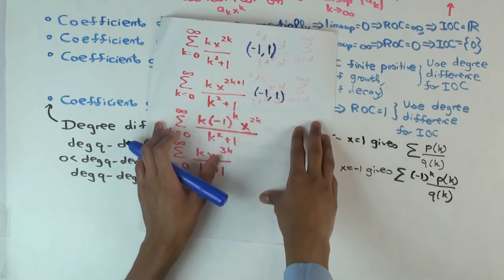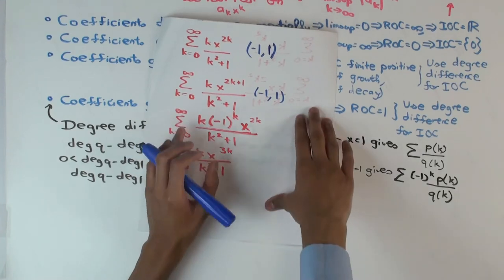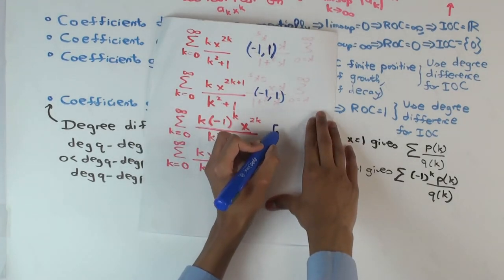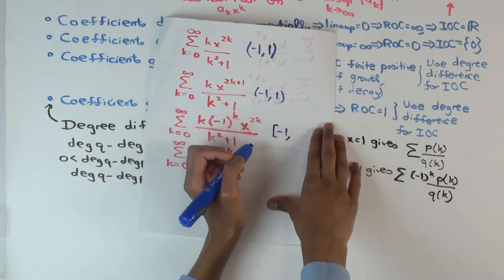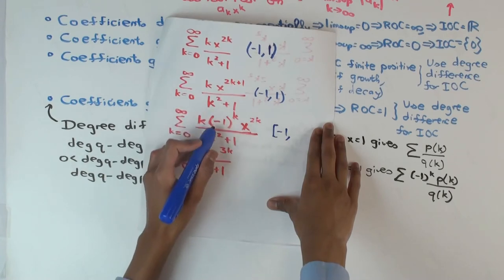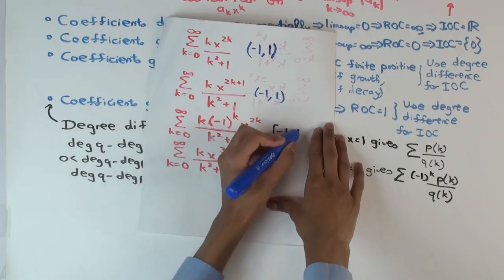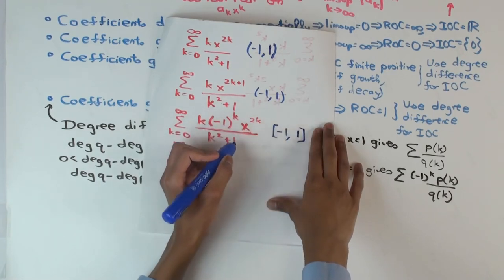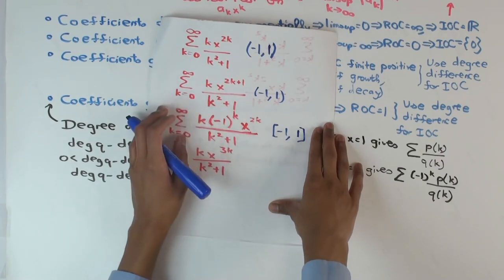What about the next one? This one is alternating. So is it closed at minus one is what you're saying? Is it closed at one? It's closed at minus one. Is it closed at one? No. Well, what happens here? When you plug in one, it's still alternating, right? Because you still have the minus one to the k. Yeah. So it's alternating at both. It includes both. Okay. I think I got confused a little bit. I'm not confused now.